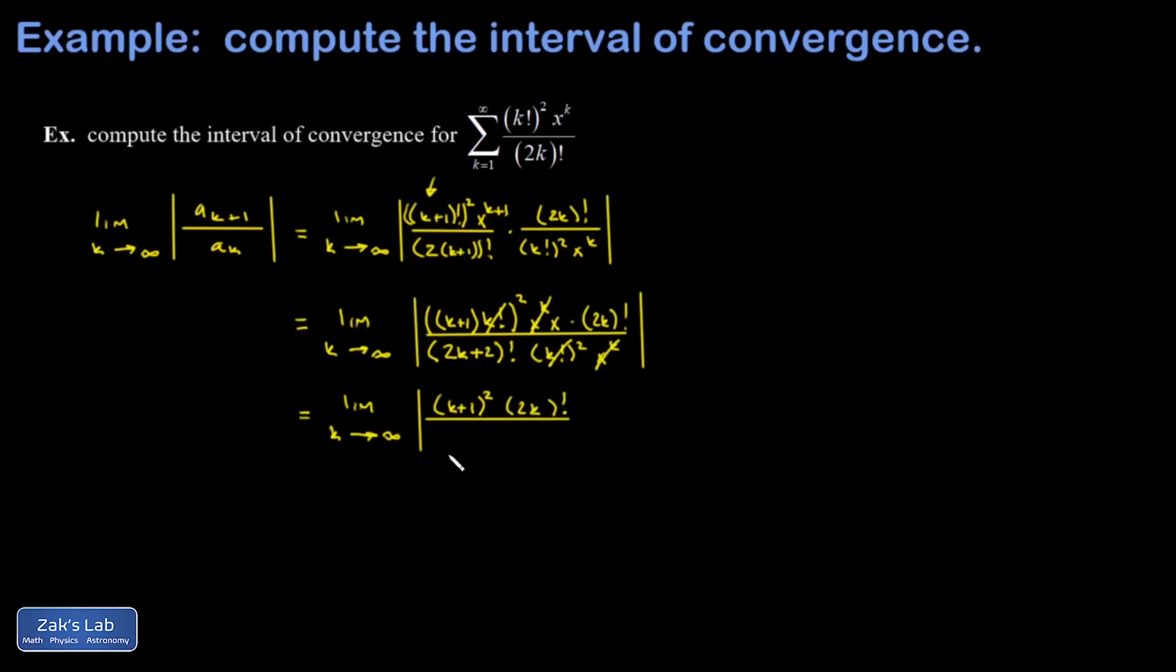And then I'm going to split off the first couple terms of the factorial in the denominator, giving me 2k+2 times 2k+1, and after that is just 2k factorial. All right, the 2k factorials are now going to cancel out.